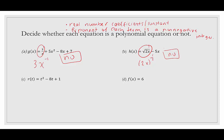Example c: r(t) = t² − 8t + 1. Real number coefficients and constants — the coefficient of t² is 1, of t is negative 8, and the constant is 1. The exponents are 2, 1, and 0, which are all non-negative integers. So yes, this is a polynomial function — and since it has three terms, it's specifically a trinomial.